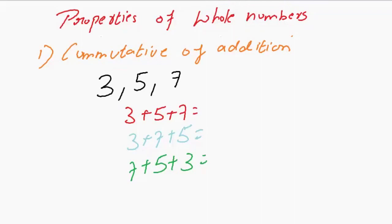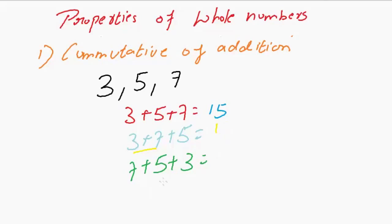Let us see what it means. 3 plus 5 plus 7: 3 plus 5 is 8 and 8 plus 7 is 15. Similarly, 3 plus 7 plus 5: 3 plus 7 is 10 and 10 plus 5 is 15. And 7 plus 5 is 12 and 12 plus 3 is 15. In all three cases the answer is the same, and this is the commutative property of addition.